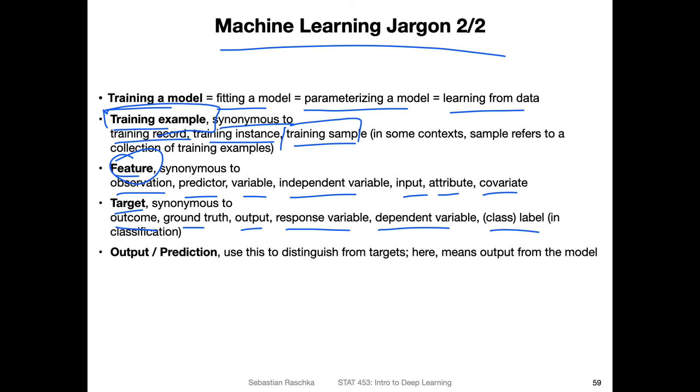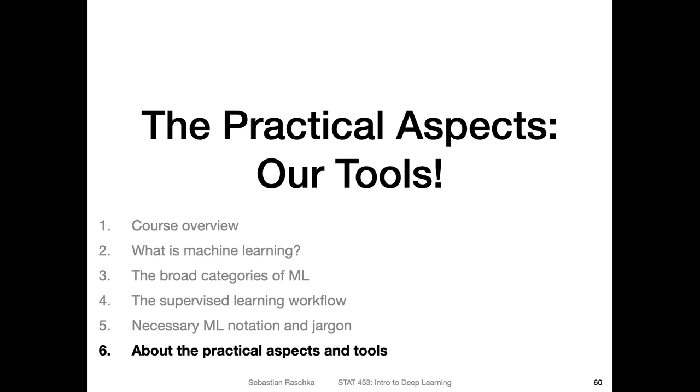So also these are all the same thing. And then lastly here, output prediction - and this is what the model produces. This is different from the target. So the target is we want to predict the target - this is the ground truth or something that is provided in the dataset. And the prediction or output is the thing that the model returns, and we want to usually match the target. Okay, so this is it for the jargon. In the next video I want to briefly talk about a little bit more about the tools that we will be using in this course.